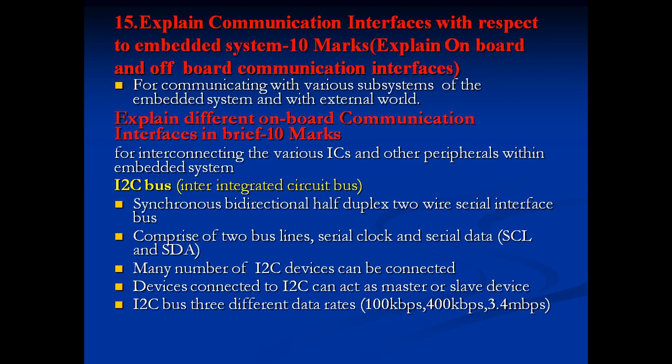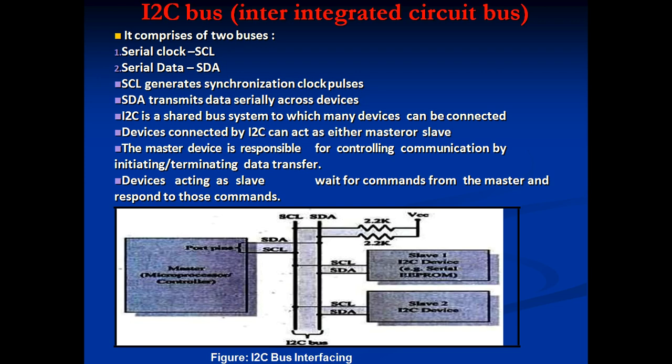You can connect multiple slave devices to a main master I2C device. It works on the principle of master and slave. The master device is responsible for controlling communication by initiating and terminating data transfers; slave devices wait for and respond to commands from the master — slaves do not generate any commands. The I2C bus supports three different data rates: 100 kbps, 400 kbps, and 3.4 Mbps.